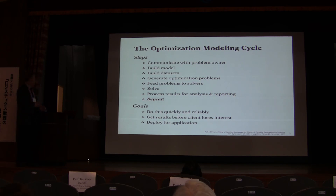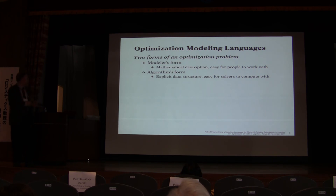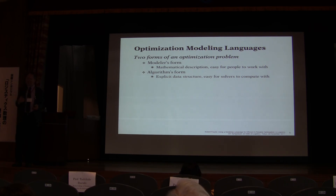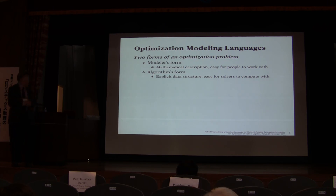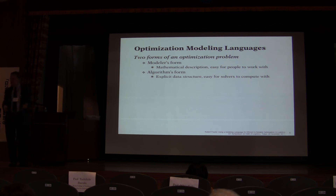In the early days of linear programming, it wasn't just that the algorithms were slow — it took so long to set up problems that you needed one expert with many talents. By the time you got any results, the client had decided it wasn't going to work. At the end, you'd like to deploy the model for application once you've found something that works.